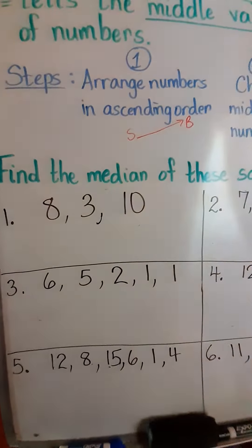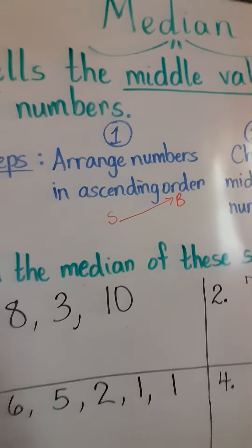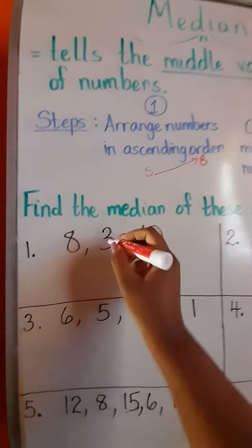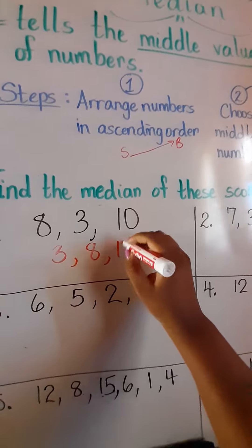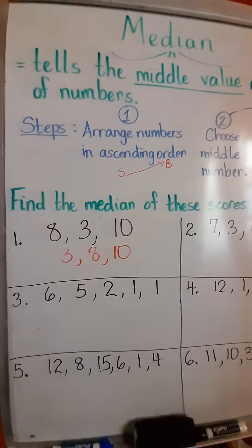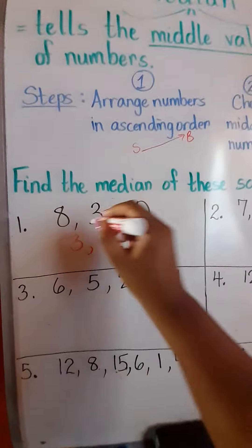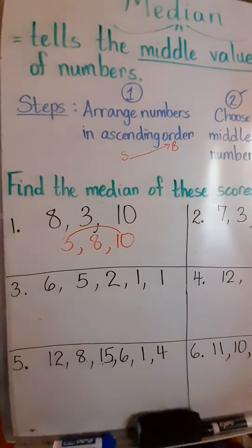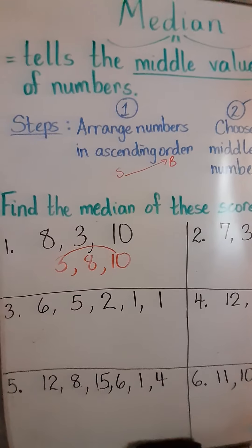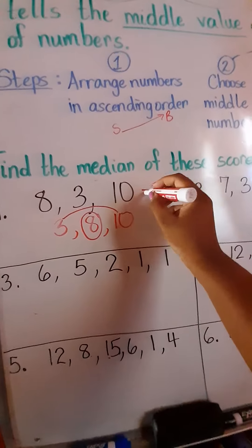Number 1. The scores are 8, 3, and 10. Step 1 says arrange those numbers in order from smallest to biggest. We start with 3 because it is the smallest, then 8, then 10. I like to use the bridge effect — it helps me find the middle number very easily. 3 bridges with 8, but 8 does not have a number to bridge with, so 8 is our middle number. Because 8 stands alone, we choose it as our median. Our median here is 8.